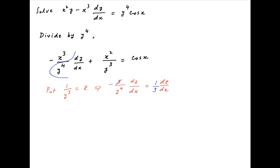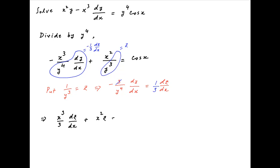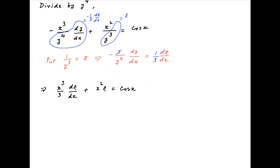Using these results in the given differential equation, we get x cube upon 3 dz upon dx plus x square z is equal to cos x. Now multiply both sides by 3 upon x cube, we get dz upon dx plus 3 upon x times z is equal to 3 cos x upon x cube.